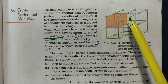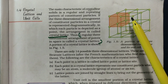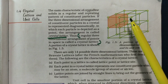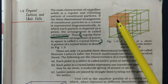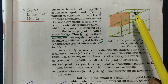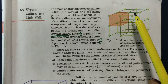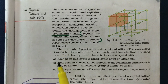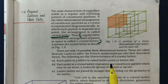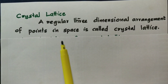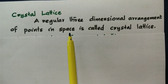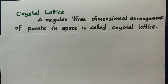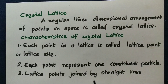Each particle is represented by a point. The particle could be an atom, ion, or molecule. Crystal lattice — what is crystal lattice? The three-dimensional arrangement of points in space is called crystal lattice. That is the definition from the textbook.